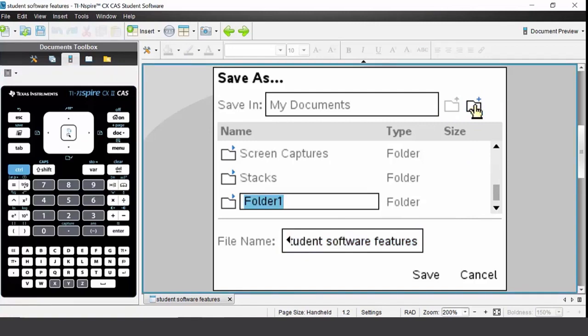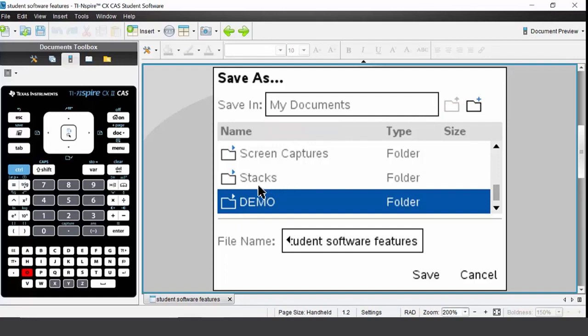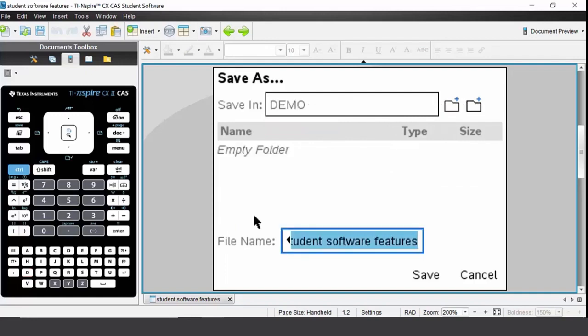Give your folder a name. Once again I'll call it demo. Open that folder, give your file a name, press save and it will be saved directly to your handheld.